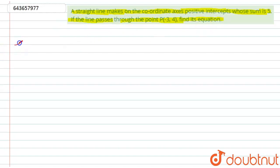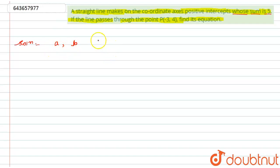So for that, let's start with the solution. In this question, we have given a straight line making on the coordinate axes positive intercepts whose sum is equal to 5. Positive intercepts are denoted as 'a' and 'b', and their sum is given, so a + b = 5, which means a = 5 - b.